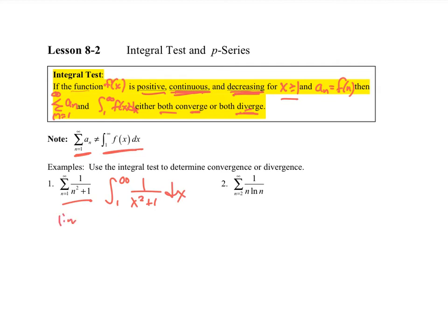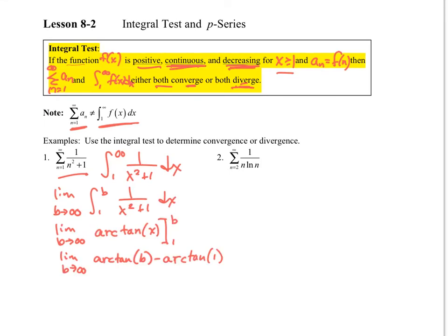This is an improper integral, so we've got to take the limit as b goes to infinity of the integral from 1 to b of 1 over x squared plus 1 dx. So I did the limiting process here.